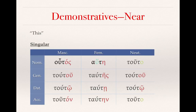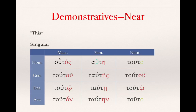The most important distinguishing trait of the near demonstrative is the feminine singular nominative, haute. If you're not attending to the breath mark, you might think this could be aute, which is the pronoun for she. Notice it's haute versus aute. The accent is over the upsilon in the demonstrative, and over the eta in the pronoun for she. The endings are very similar, with the addition of either the rough breathing in houtos and haute, or the tau added before what is essentially the definite article.